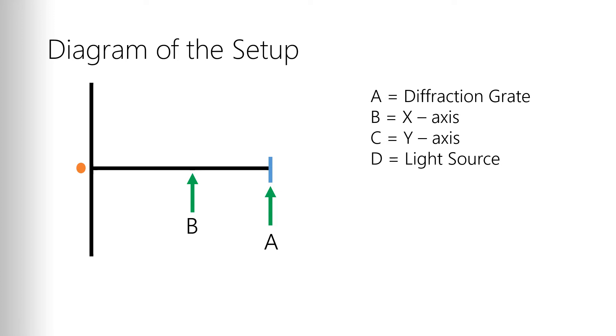So the long axis between the diffraction grate and the light source is what we're going to call the x-axis. That value is going to remain constant throughout the experiment because you're not going to move the light source and you're not going to move the diffraction grate. And actually set this to a hundred centimeters makes it nice and easy. One meter for you to work with.